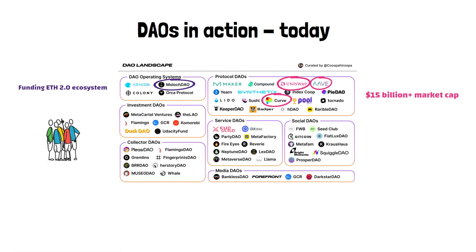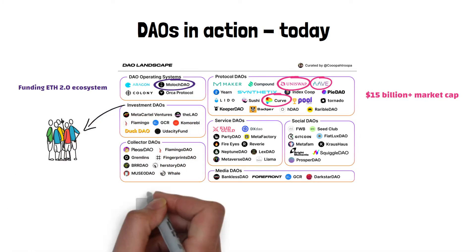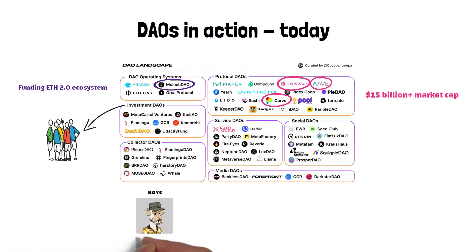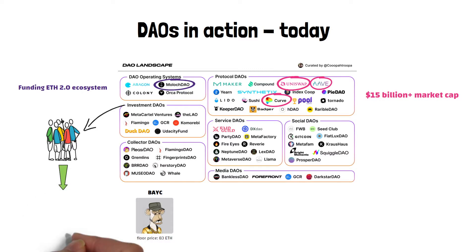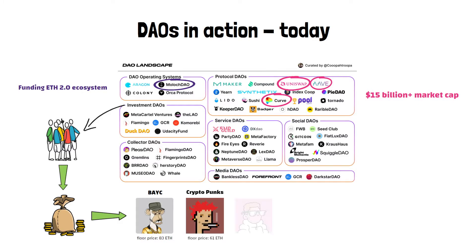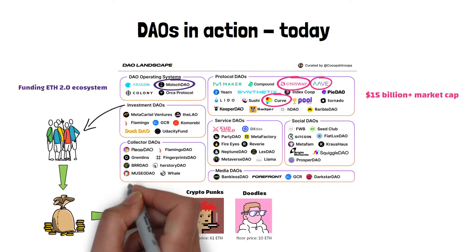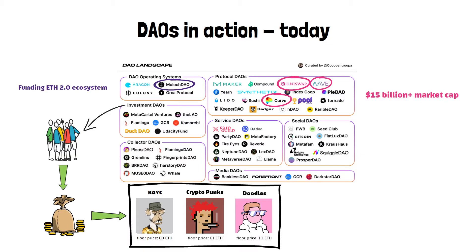People are also using DAOs to invest together. For example, if you want to buy an NFT from the BAYC collection, the cheapest one is 83 ETH — nearly $300,000. Even if you have that kind of money, it's a lot of risk for most people. So instead, you could form a DAO, pool funds from people, and buy a few NFTs through the DAO. This way, you can diversify your collection and have fractional ownership of many expensive NFTs.